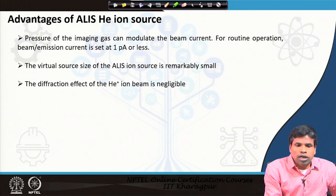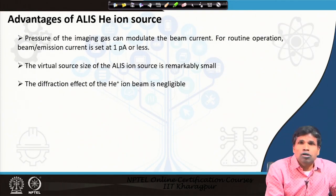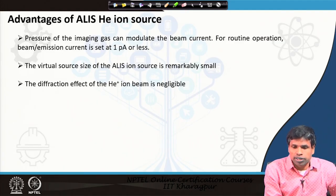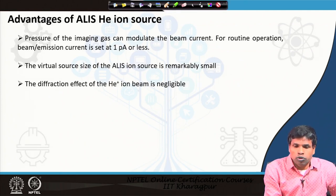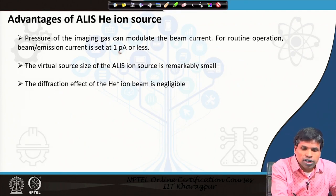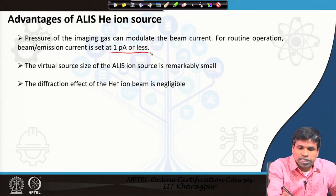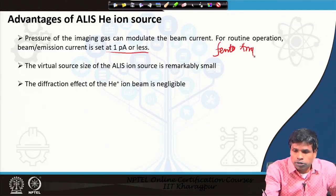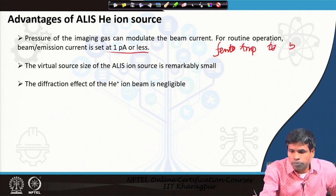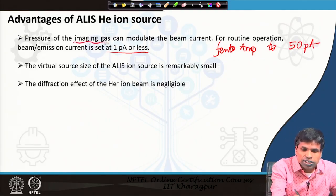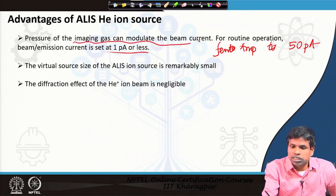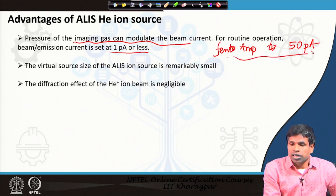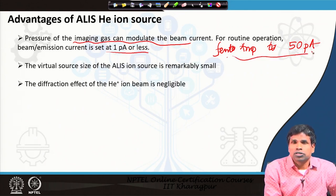An advantage of the helium ion source is that the pressure of the imaging gas can modulate the beam current. For routine operation, a beam current of 1 picoampere or less is good enough, but it can be modulated in the range from femtoamperes up to around 50 picoamperes or larger by modulating the imaging gas pressure. This gives a much larger current range than the scanning electron microscope.